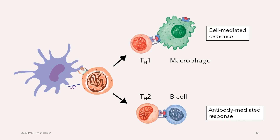Don't think of this as clear-cut, where it's either TH1 or TH2. Things are actually messier than a simple TH1 versus TH2 division. Often the balance between the two can determine the outcomes of infection. A reference link will be provided for further reading.